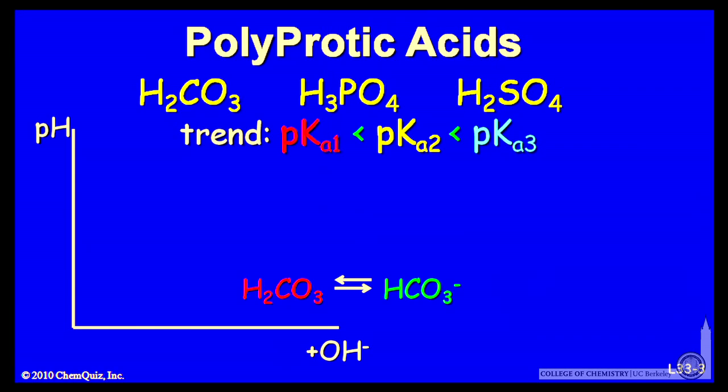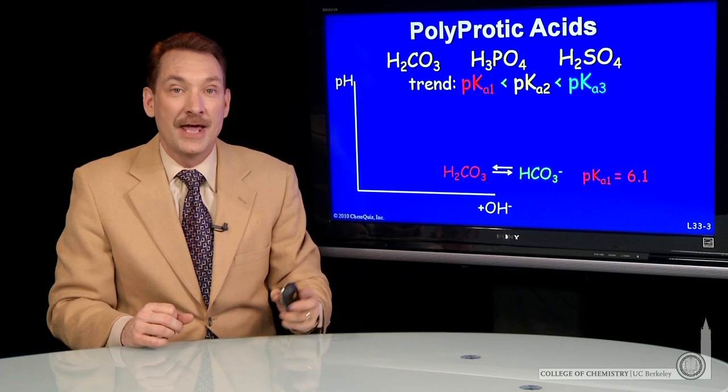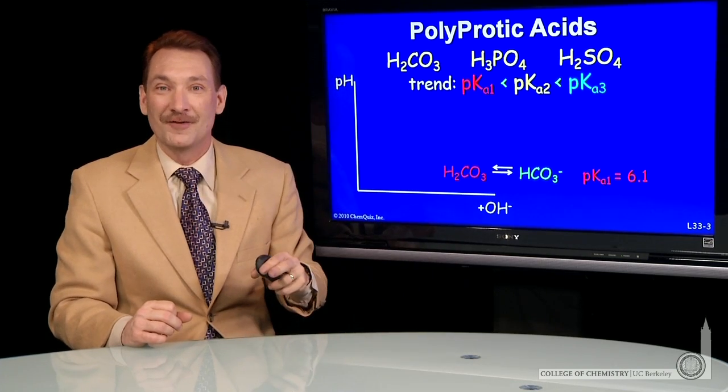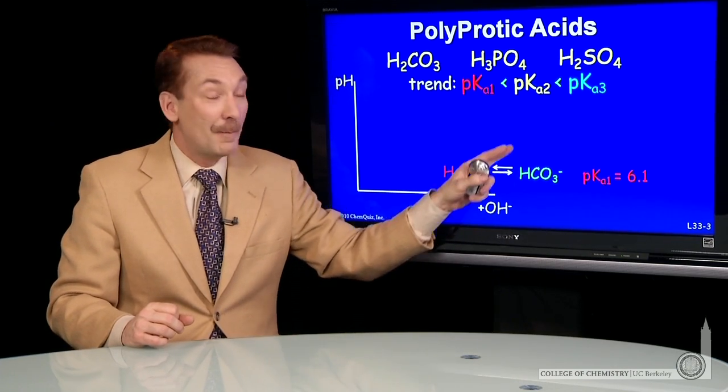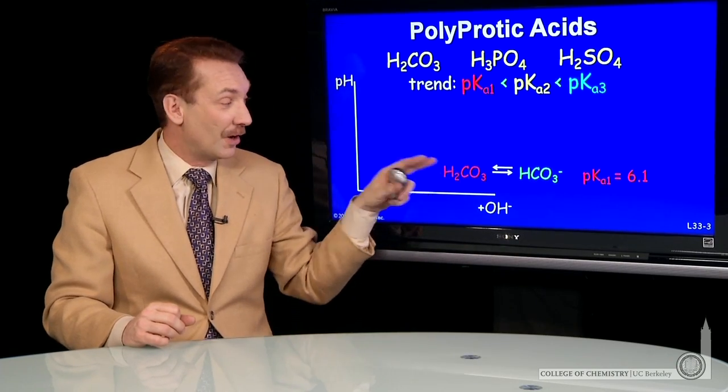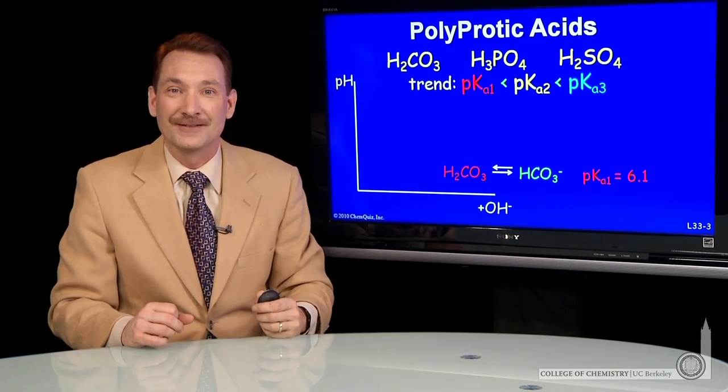So let's look at that. For carbonic acid, for instance, the first pKa is 6.1, and that represents an equilibrium between the H2CO3 species and the deprotonated HCO3 minus species. At pH 6.1, there'd be an equal mixture of both of those. pH is above 6.1, the base form predominates. pH is below 6.1, the acid form predominates.